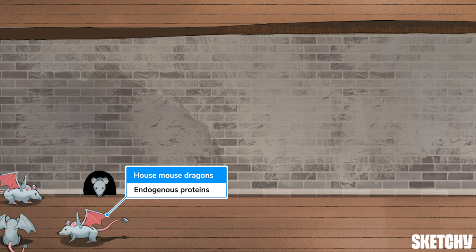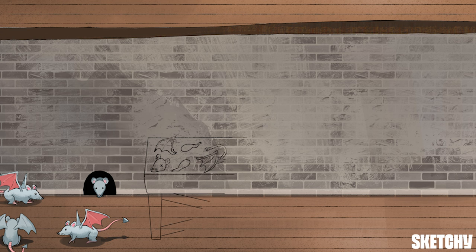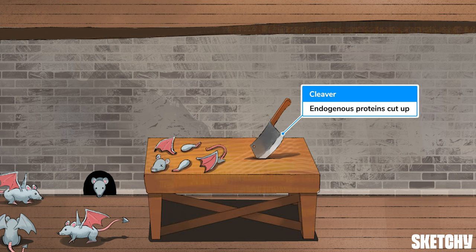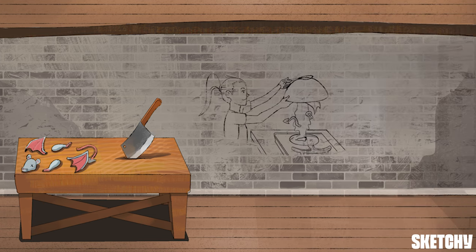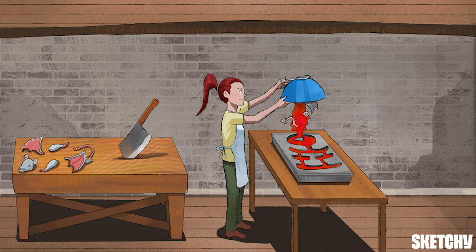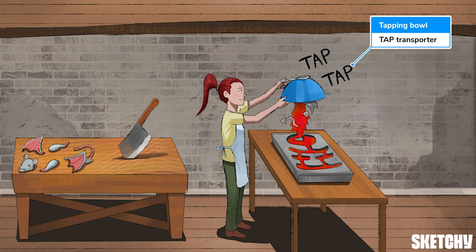As tasty as house-mouse dragons are, they still require a bit of processing. Newly produced endogenous proteins — meaning proteins that come from inside the cell — are cut up into smaller peptides inside proteasomes. The fact that they're newly produced is helpful because it aids the T-cell army in responding earlier to an infection. The cut-up mouse dragon peptides are then poured out of their bowl, which requires some tapping to get every last bit out. This tapping represents the TAP transporter, which brings the peptides into the endoplasmic reticulum, or in this case, into an ER-shaped cooking mold.